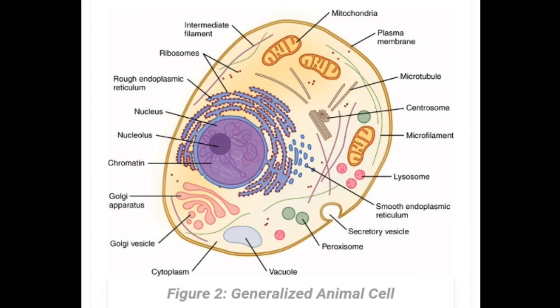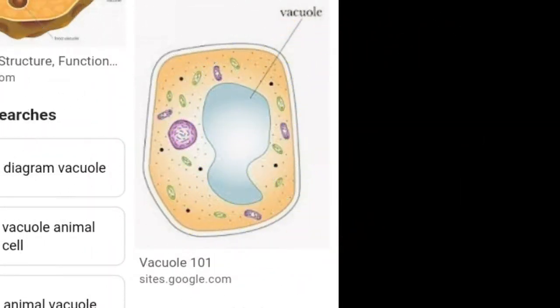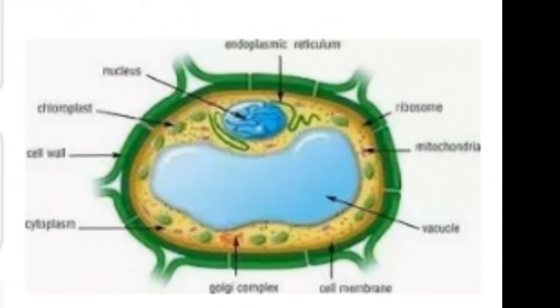In animals, vacuoles are often associated with the maintenance of water balance — they work as an osmoregulator, maintaining internal pressure. They also store various substances including waste products, which is why vacuoles are called the storehouse of the cell.